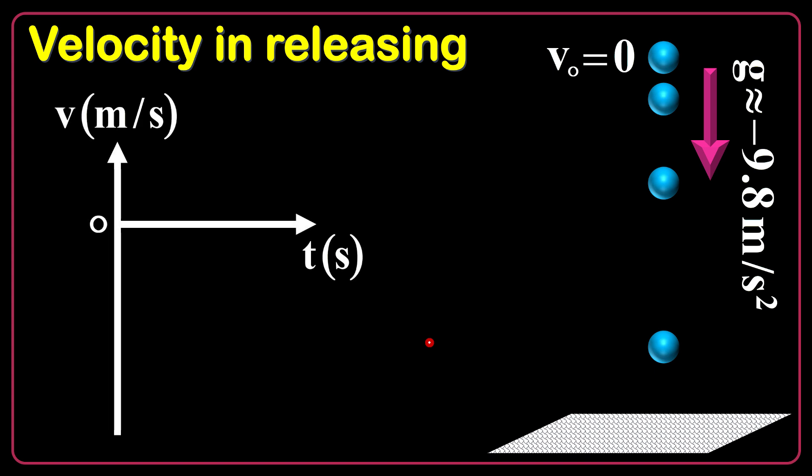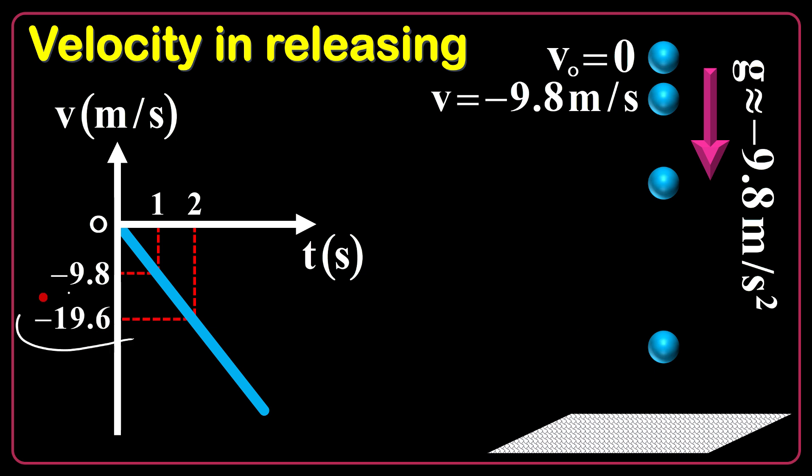Okay, the v-t graph will be a descending line because the slope of this line will be the acceleration. It's 9.8 meter per second. It means that if I wait for one second, the speed will get 9.8 meter per second and for the other one second, it will get negative 19.6. You see here the gain in the speed is 9.8 meter per second and it is continued to negative 29.4 for the t equals 3. That's all.